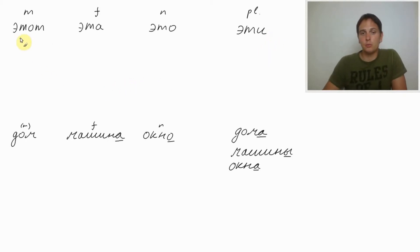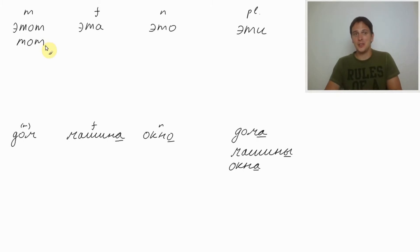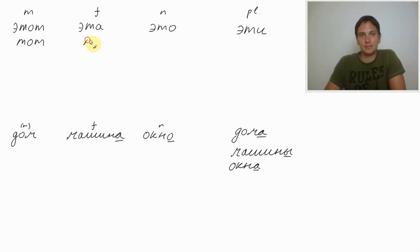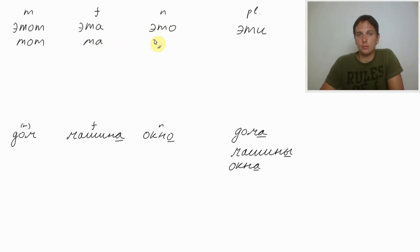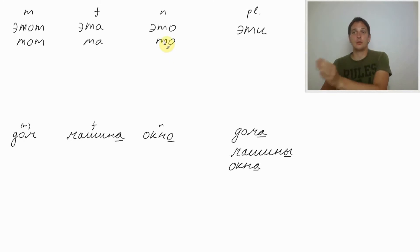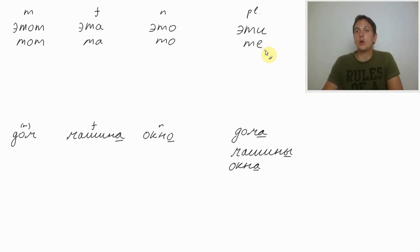The next demonstrative pronoun is тот (tot). Тот дом — that house over there. Этот means this house here; тот means that house over there. For feminine: та (ta). Та машина — that car over there. For neutral: то (to). Это окно — this window here; то окно — that window over there. And for plural we have те (te): те дома — those houses; те машины — those cars; те окна — those windows.